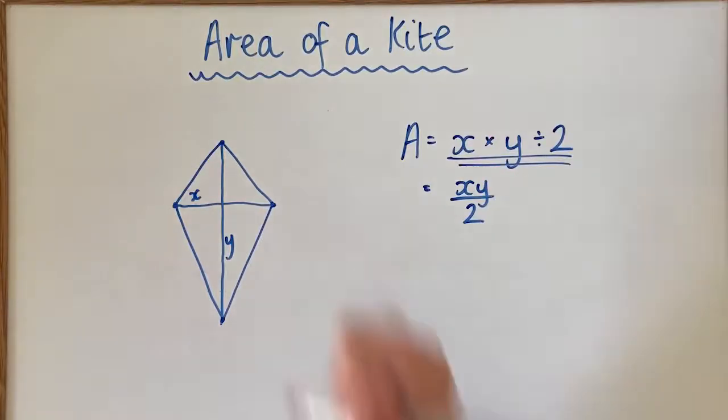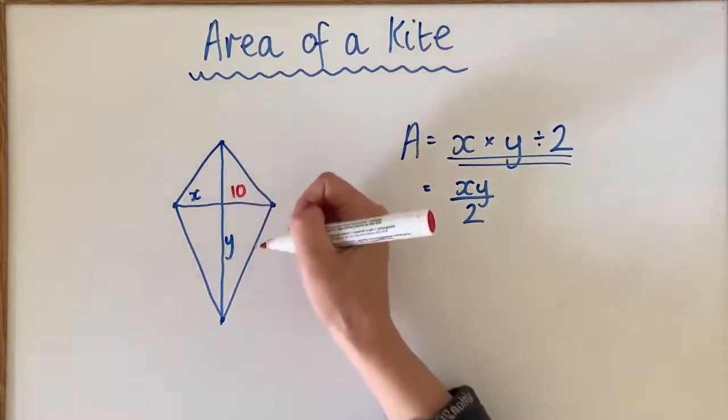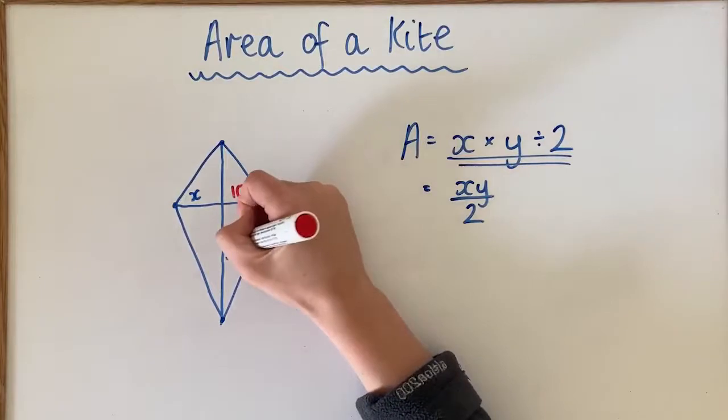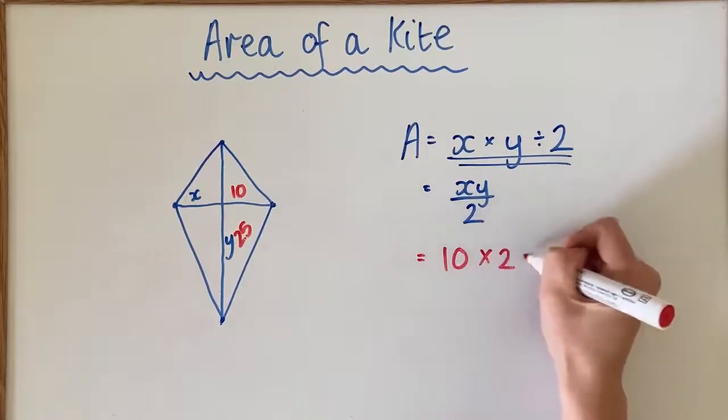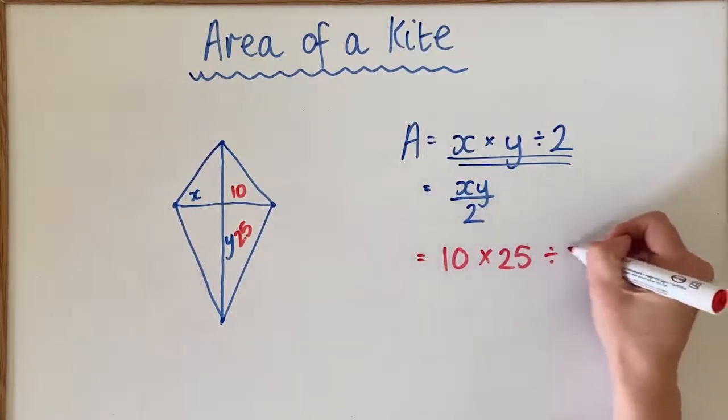So for this shape, if the x value is 10 and the y value was 25, we would go 10 times 25 divided by 2.